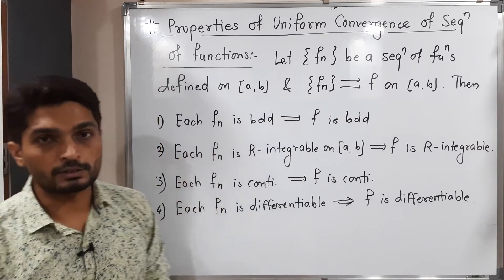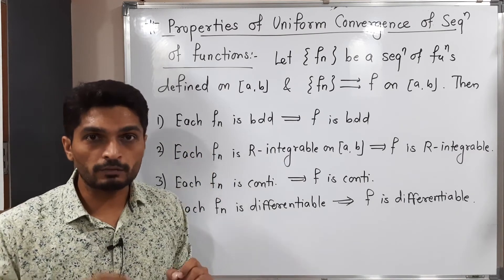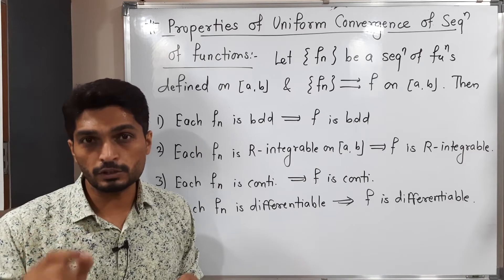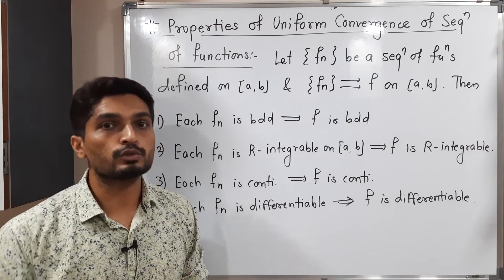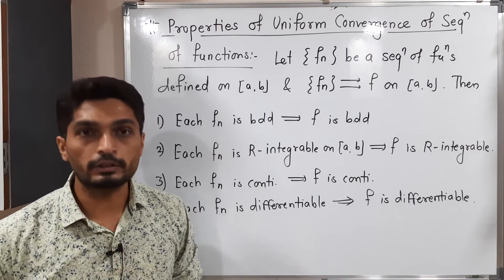Then we have these four properties. The first one: if each fn is bounded, then F is also bounded. The second: if each fn is continuous, then F is also continuous.